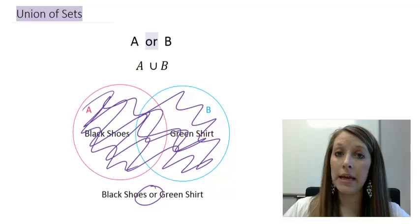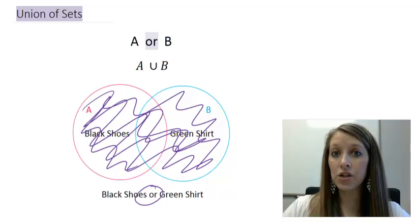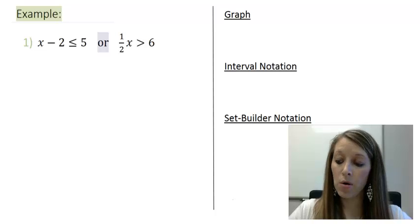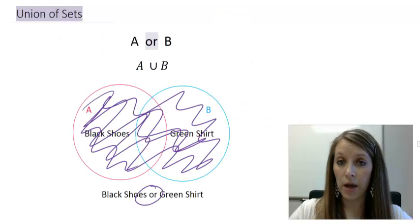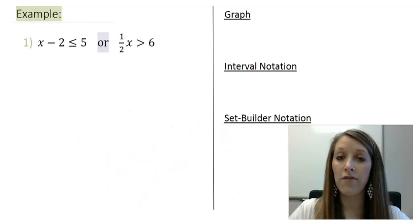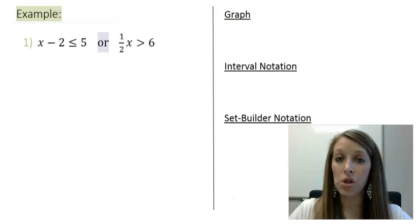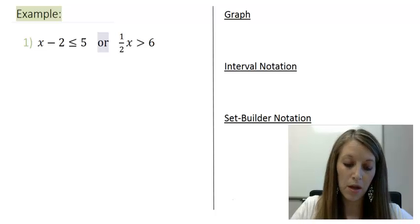Okay, now that we see what and and or means. Let's actually use this in an inequality example. So, example one. I have X minus 2 less than or equal to 5. Or, one half X is greater than 6. Now, remember, or is anywhere it's satisfied. And we'll have to keep that in mind when we're doing our final answer here. The way to solve these inequalities is just to solve them one at a time and keep that or statement all the way through.